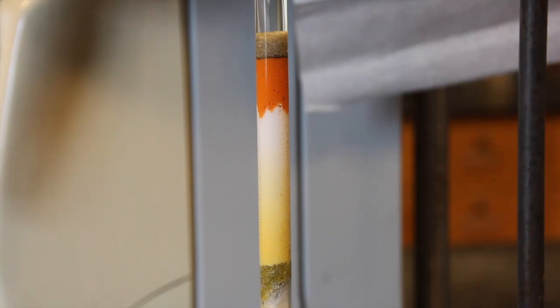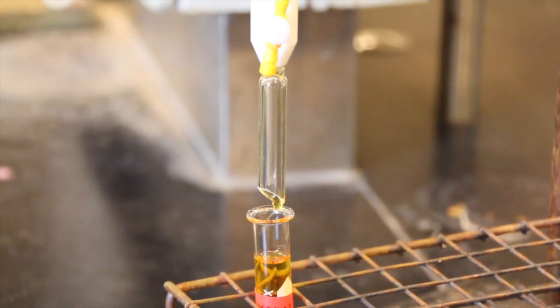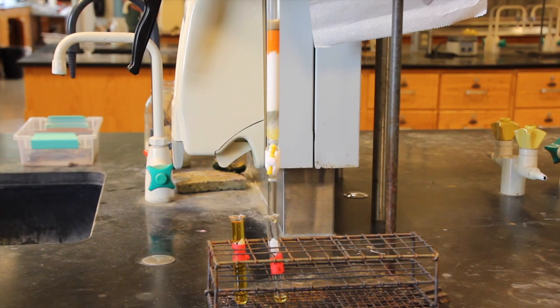A yellow-orange band of ferrocene should come down the column first. Close the stopcock on the column after collecting all of the ferrocene. Next, test all of your samples by TLC.